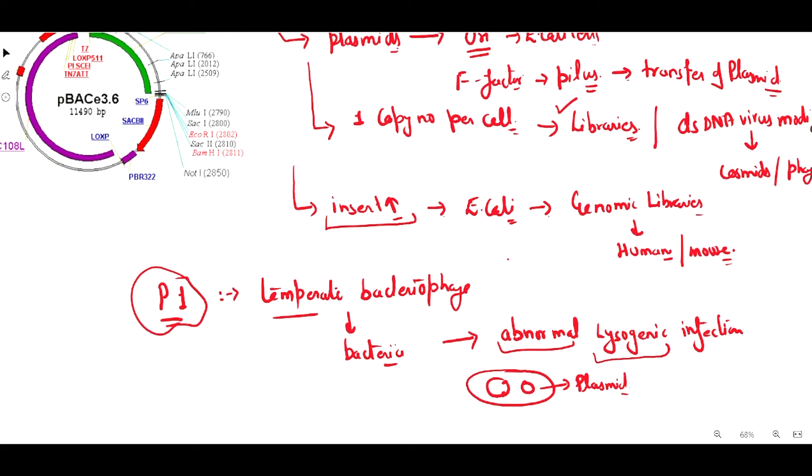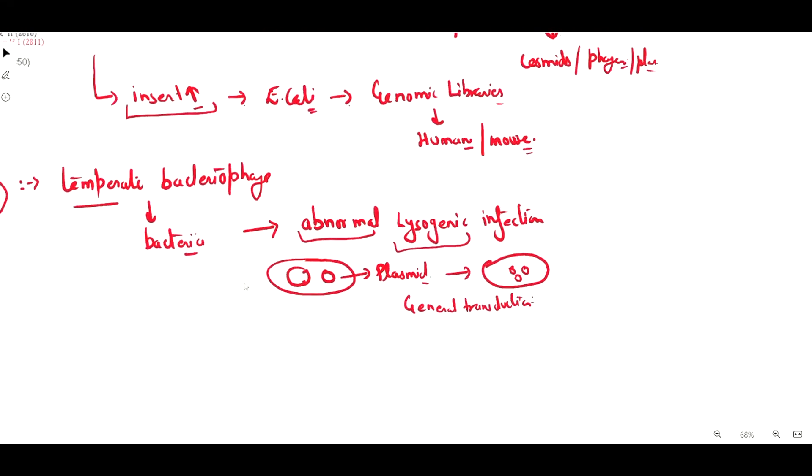It has the ability to transfer the plasmids from one cell to another cell as independent plasmids, by the process called general transduction, which is later developed as Cre-lox recombination.